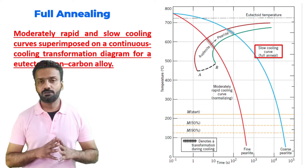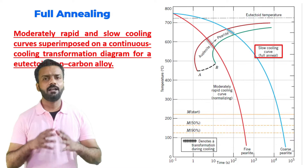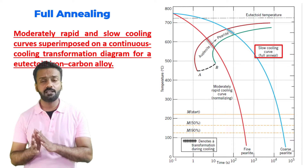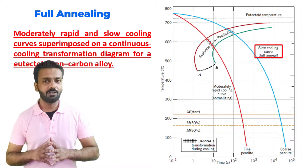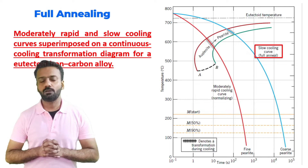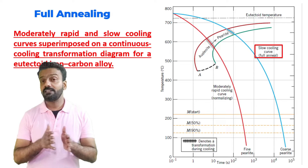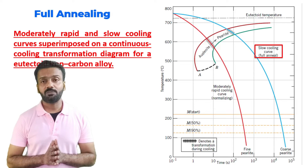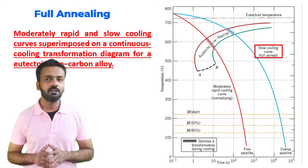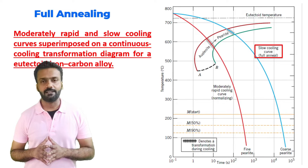Here is an example of the continuous cooling transformation diagram for annealing. We have two cooling curves shown — one for annealing and one for normalizing. Looking at the full annealing cooling curve, we can see that when we cool the material very slowly, the end product is coarse pearlite.